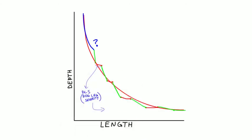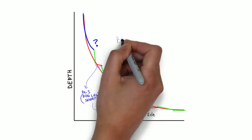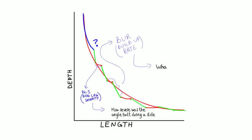In the well, the maximum angle build is known as dogleg severity, while the average angle change is the buildup rate.